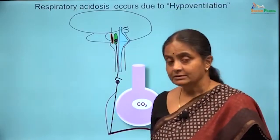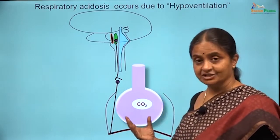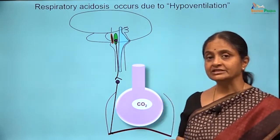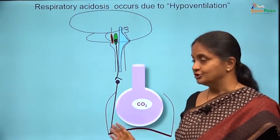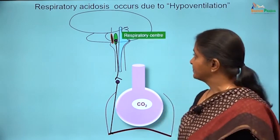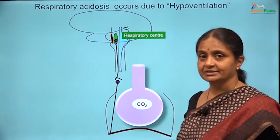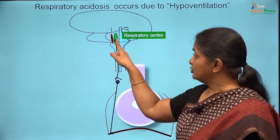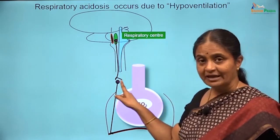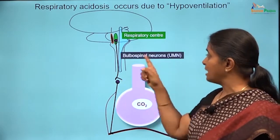We will now look at mechanisms which can lead to a decrease in ventilation. Respiratory acidosis is due to hypoventilation, and hypoventilation could result from a number of causes. The respiratory center in the medulla oblongata can be depressed, or the neurons going from the respiratory center to the cervical segments of the spinal cord can have problems. These are referred to as upper motor neurons.